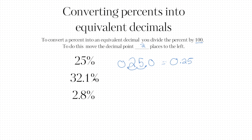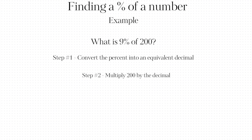Here we have 32.1%. Again, I'm going to move the decimal two places to the left — one and two — so this would be 0.321. And finally we have 2.8%. I need to move the decimal two places to the left, but there's only room for one spot, so I add a zero, move over one spot, add a zero, then move one more spot — so 2.8% as a decimal would be 0.028.